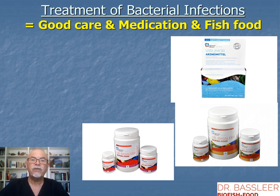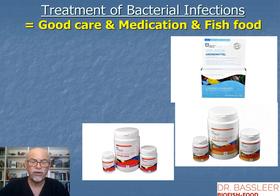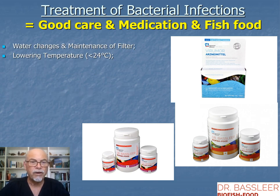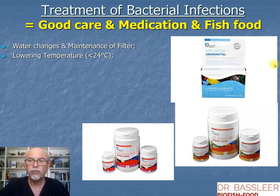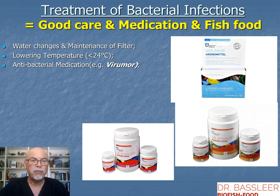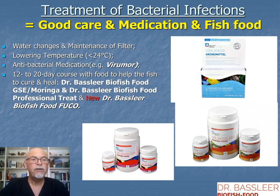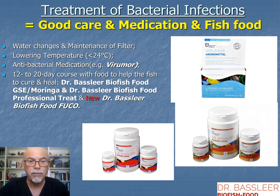Treatment of bacterial infections: these three things together should help your fish survive. Do water changes before the treatment. Do good maintenance of the filter. Try to lower the temperature a few degrees — keep it below 24°C so the bacteria don't grow so fast. Add an antibacterial medication like Viromor from Aquarium Munster. Do a course of 12 to 20 days with a food that helps the fish to cure and heal, because the fish only heal through feeding — the medication kills, but the food heals the fish.